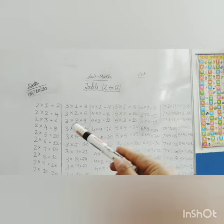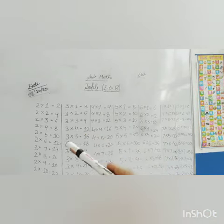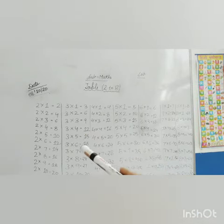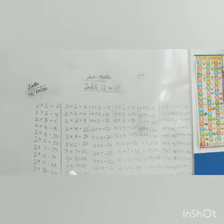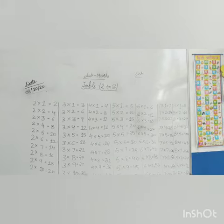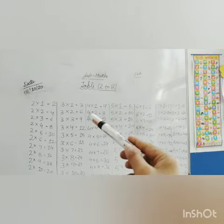3 twos are 6, 3 threes are 9, 3 fours are 12, 3 fives are 15, 3 sixes are 18, 3 sevens are 21, 3 eights are 24, 3 nines are 27, 3 tens are 30. This way.